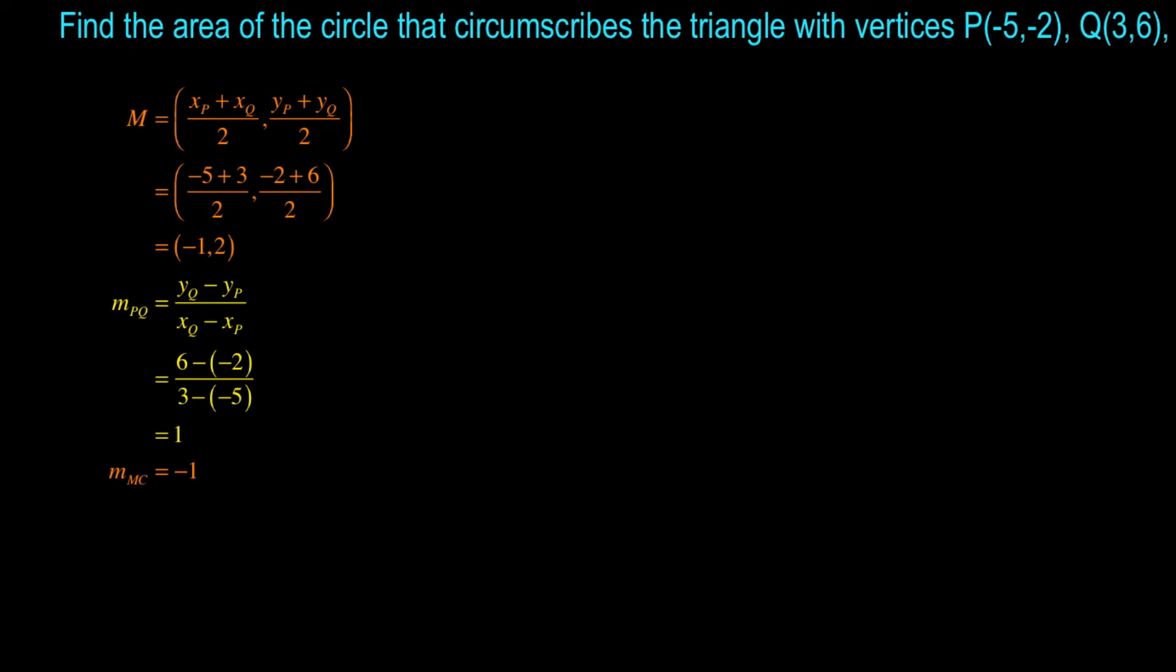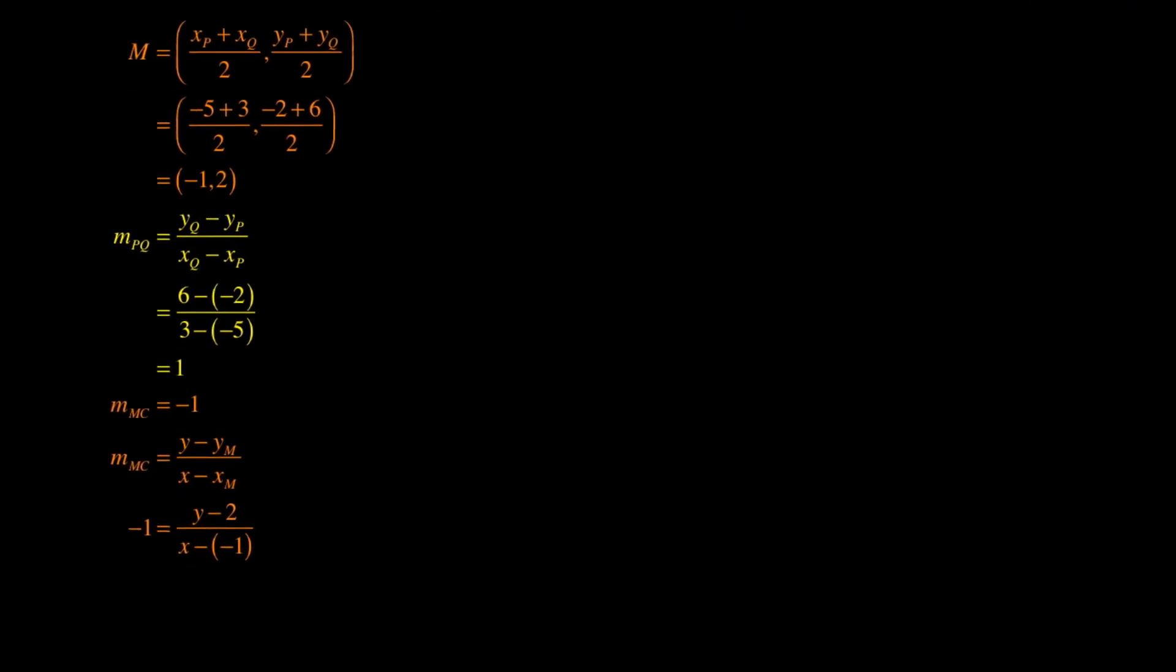From there, I use my point slope form of a line, which we've now done multiple times. So I substitute in -1 = (y - 2) / (x - (-1)), -1 being the x coordinate of midpoint M.